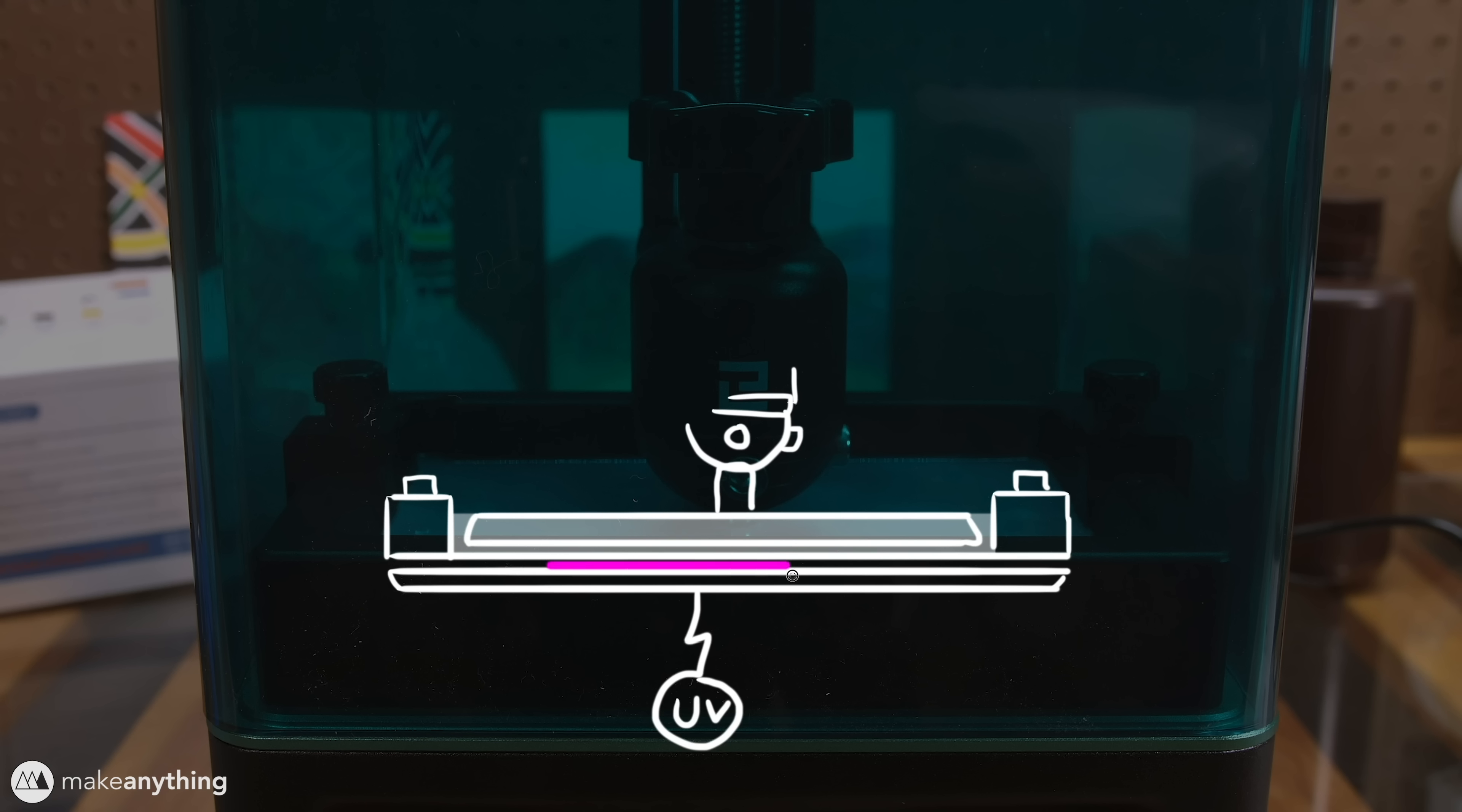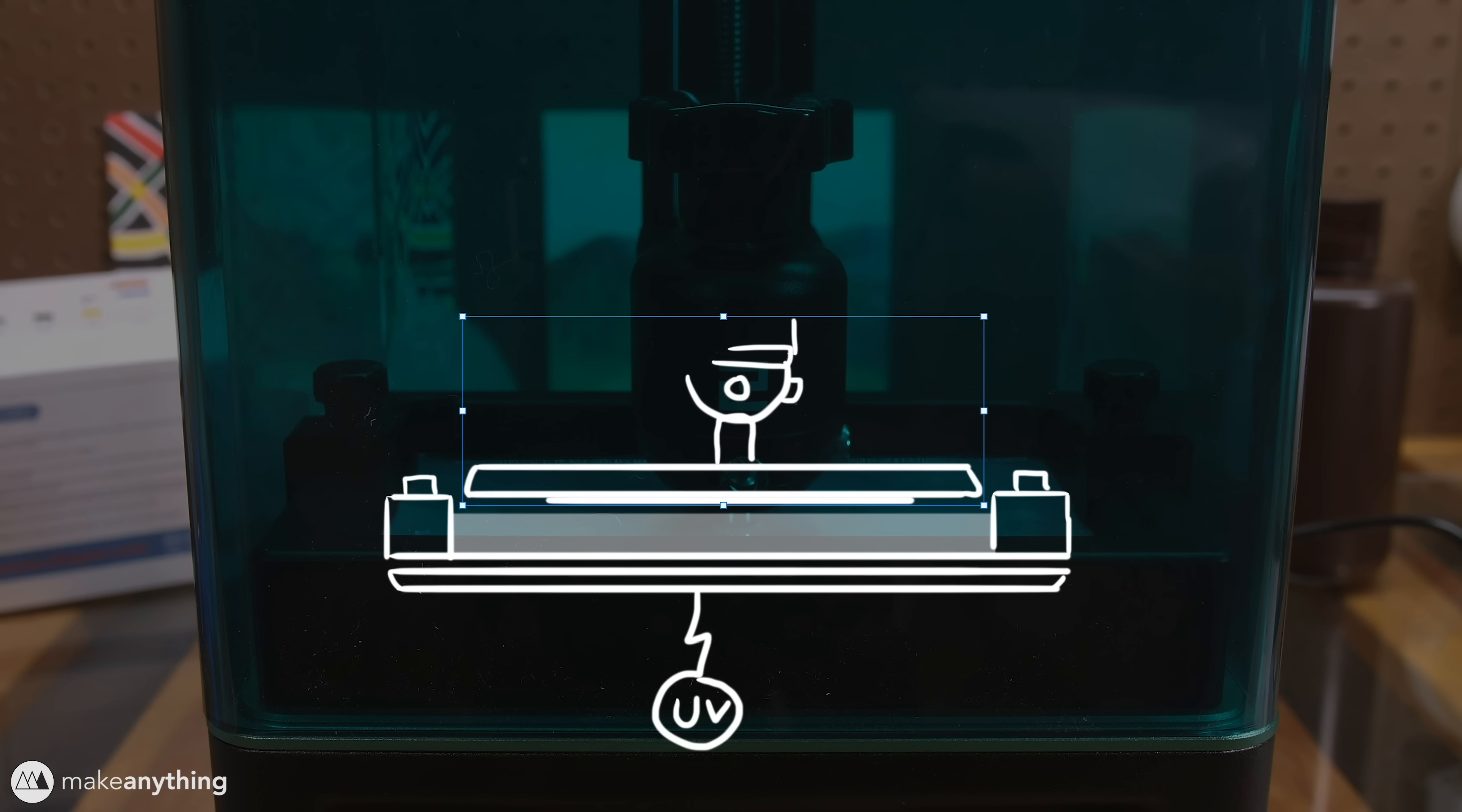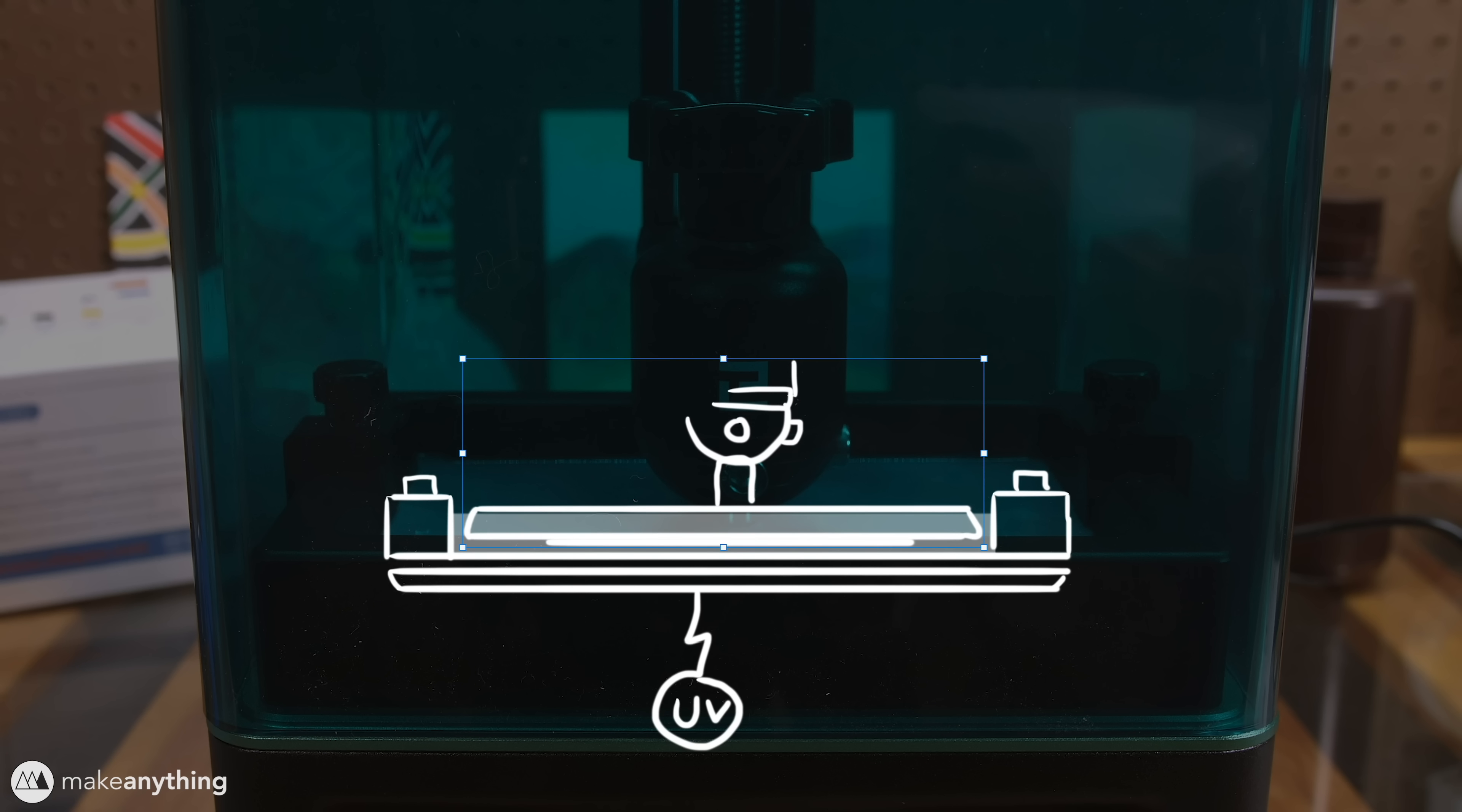Lower the build plate down into the vat until there's just a tiny bit of space between the bottom of the vat and the surface of that build plate. At this point the LCD screen will project the image of the first layer up towards that resin and that UV light will cause the resin to cure in between the build plate and the vat. It only takes a few seconds for that resin to harden at which point we can turn off the LCD display and lift the build plate out of the vat, hopefully taking that layer of resin with it.